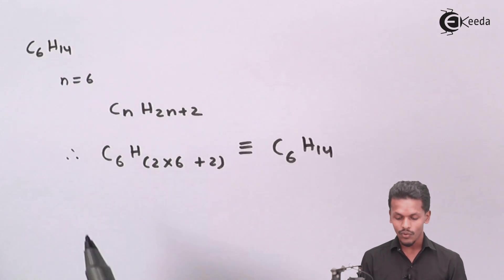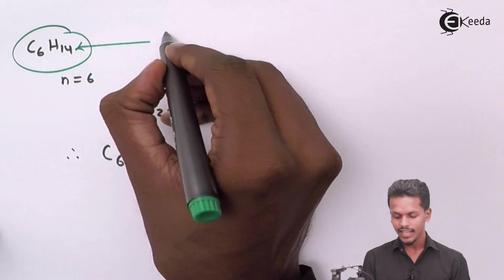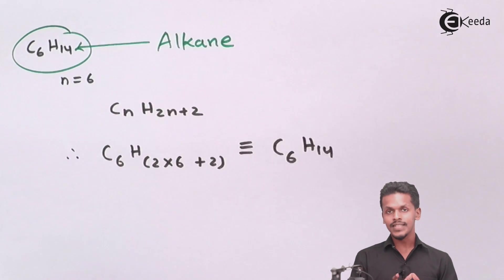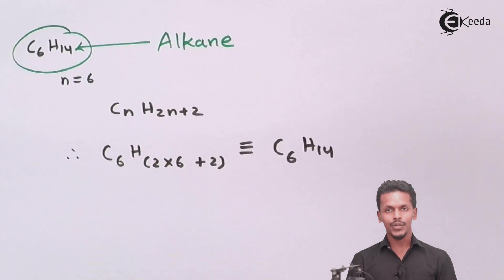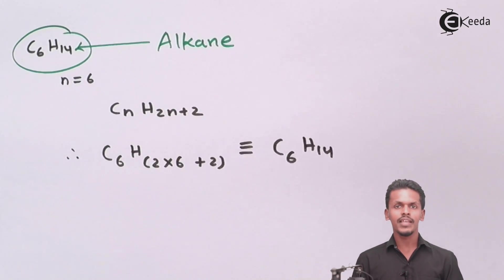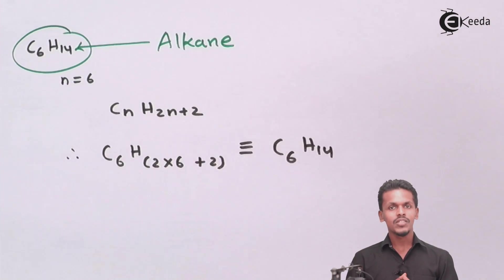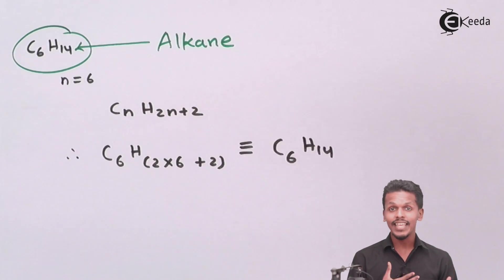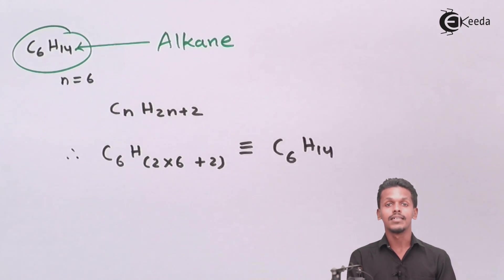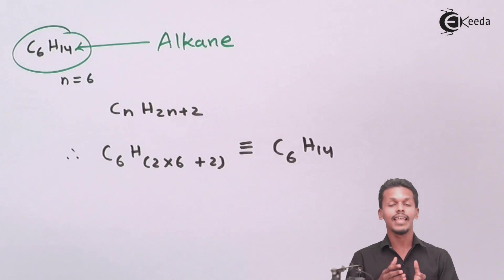The general formula plays a very vital role in understanding whether a given molecular formula is an alkane, alkene, or alkyne, because all three hydrocarbons have different general formulas. Based on this, we can estimate the type of hydrocarbon in any chemical reaction or analysis.